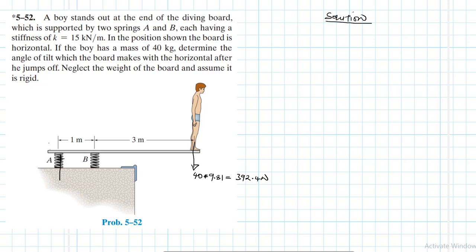We expect reaction forces Ay and By at the two springs. Once we calculate those, we note that when the diving board goes down where the boy is standing, point B will be pushed downwards — the spring at B will be compressed — while the spring at A will be stretched upward. There will be some kind of rotation, since this is an overhanging beam.